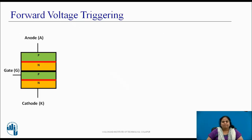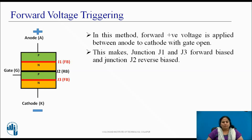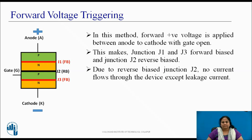Forward voltage triggering is the simplest method used to turn on SCR. In this, forward, i.e., positive voltage is applied between anode to cathode keeping the gate terminal open. This forward voltage makes junction J1 and J3 forward biased and junction J2 reverse biased. Due to this reverse biased junction J2, no current flows through the device except leakage current.